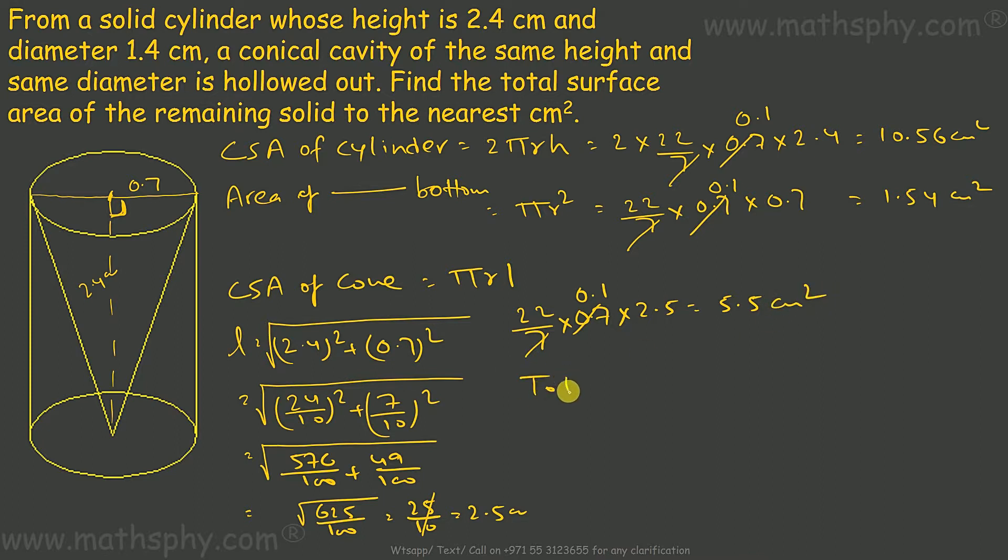Total surface area will be 10.56 plus 1.54 plus 5.5. Our surface area of cylinder, bottom, and this dug out cone, that will be 17.6 cm². It says nearest cm², so you can write it as 18 cm² also. Approximate is 18, exact is 17.6 cm². Alright?